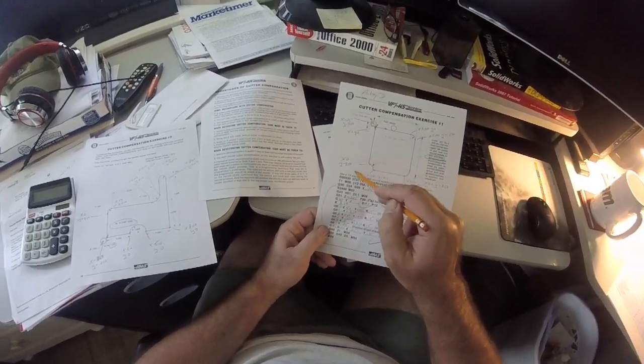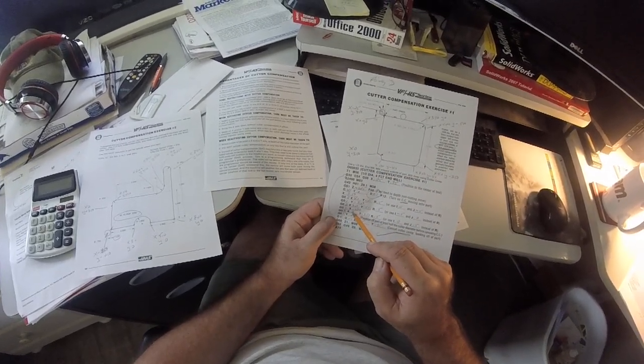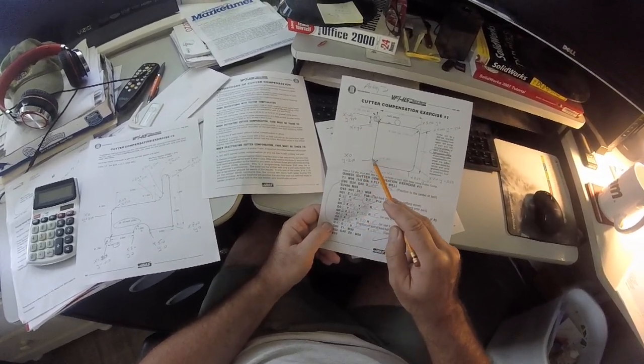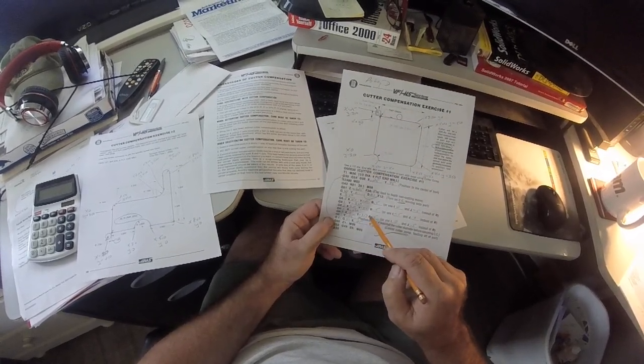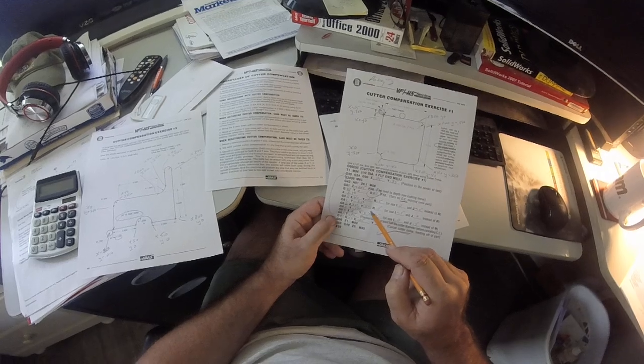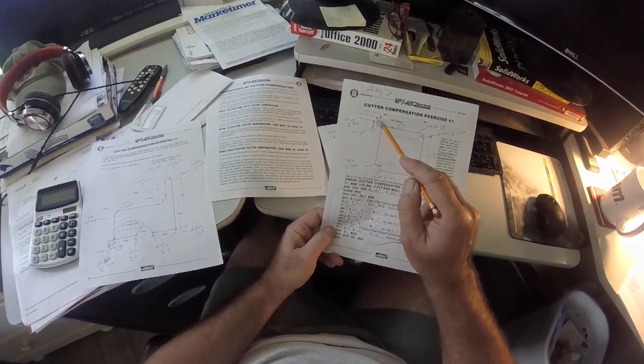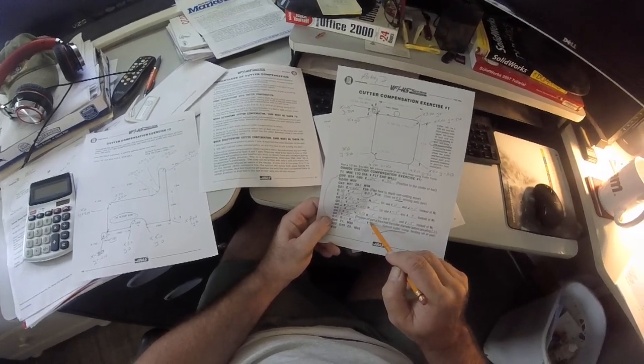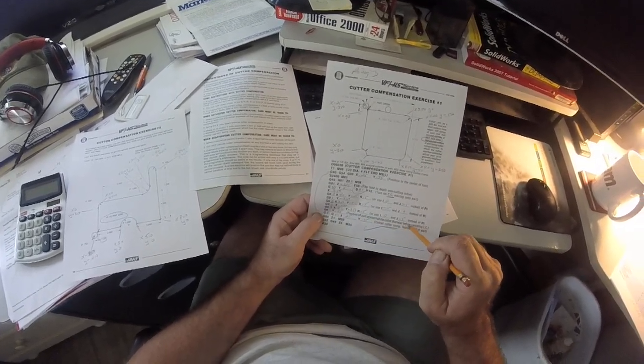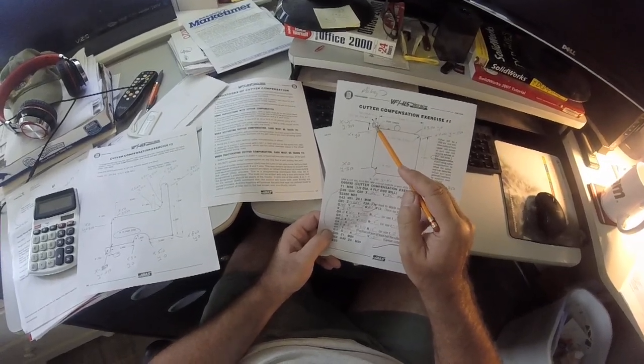Now we're going to go counter-clockwise, which is G3, and X0, which is this position right here, and Y negative 3.5, same arc size. And then we're going to go all the way up and cross the finish line at .25. It says right here, position off at least half the cutter diameter. So .25 would be half.